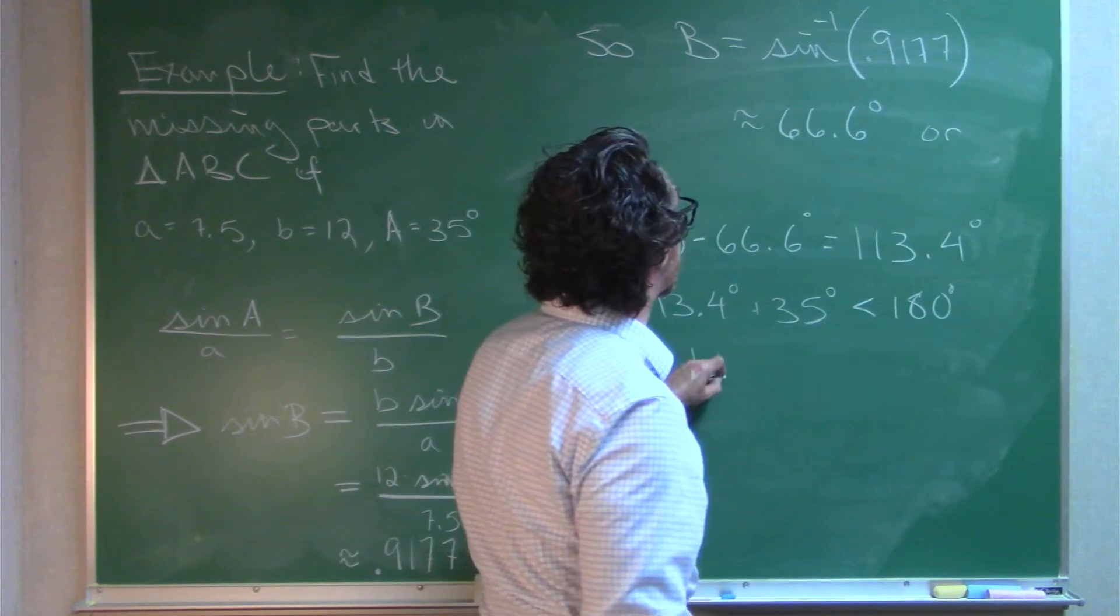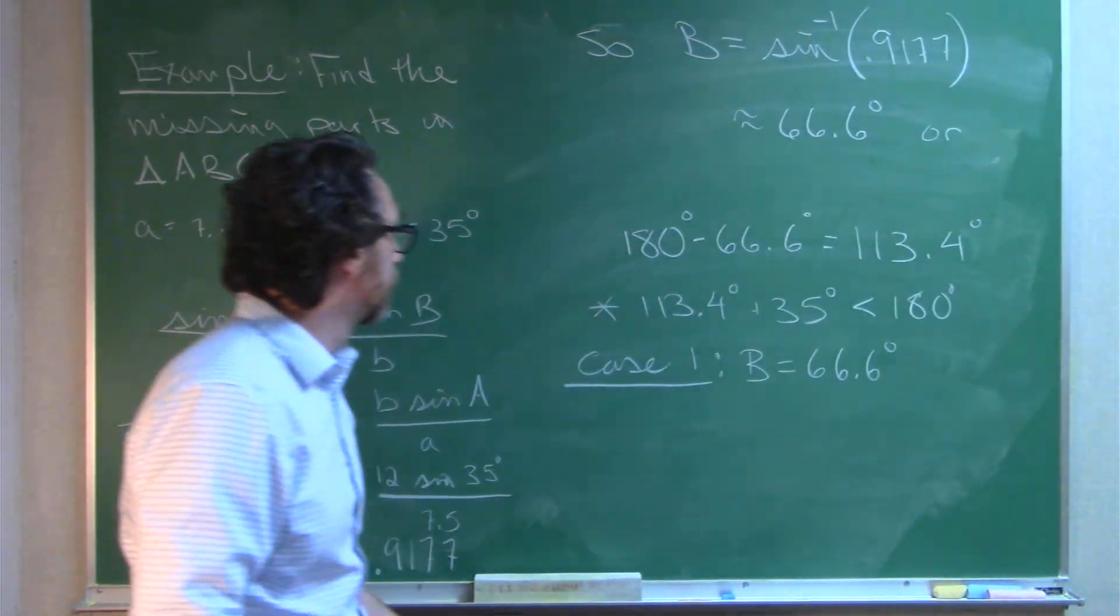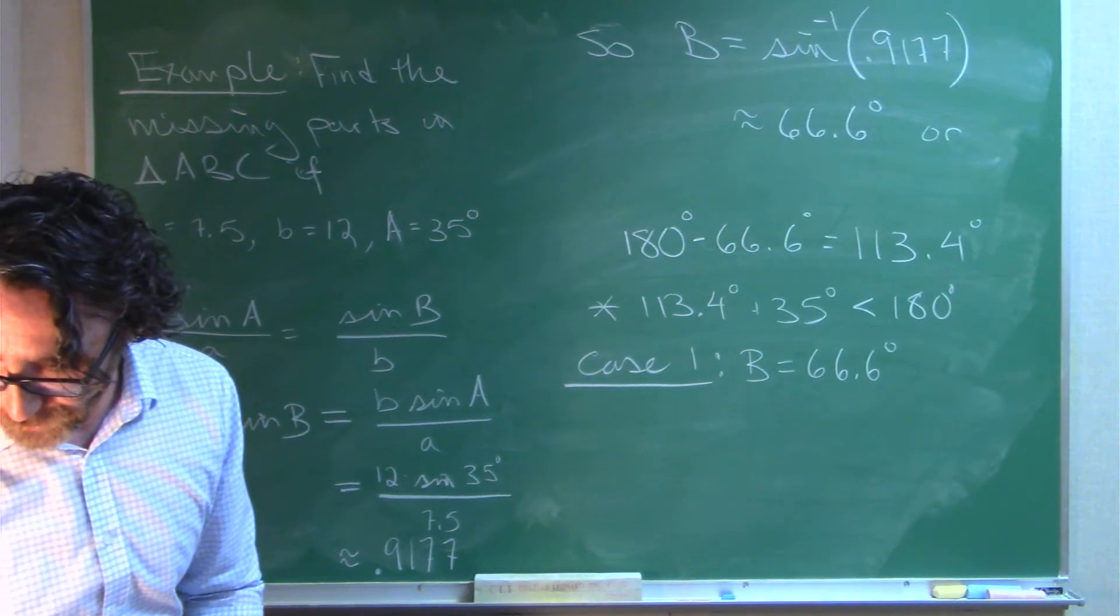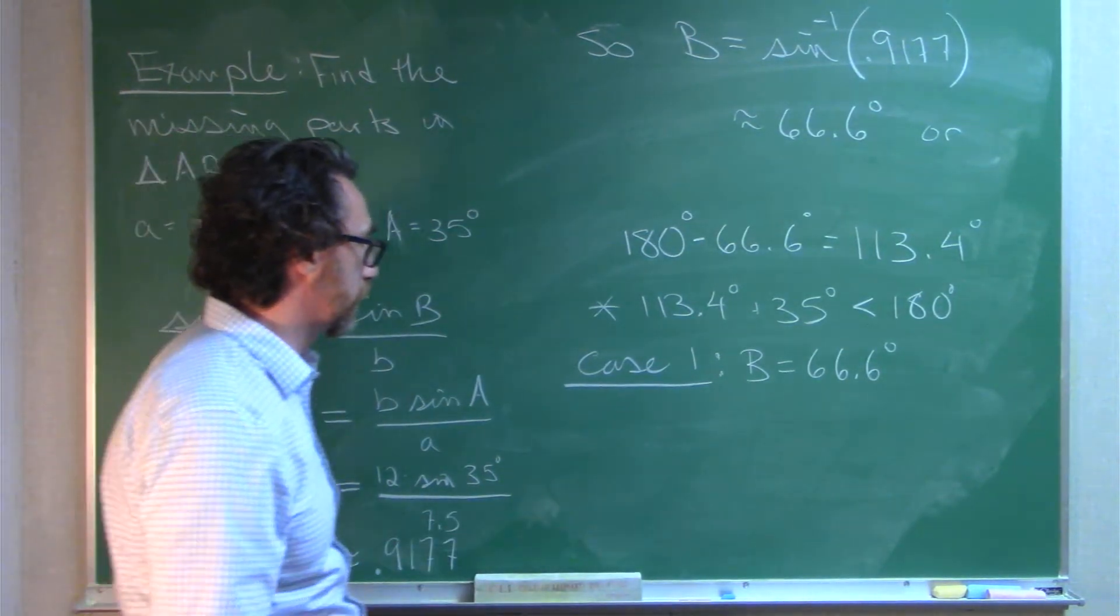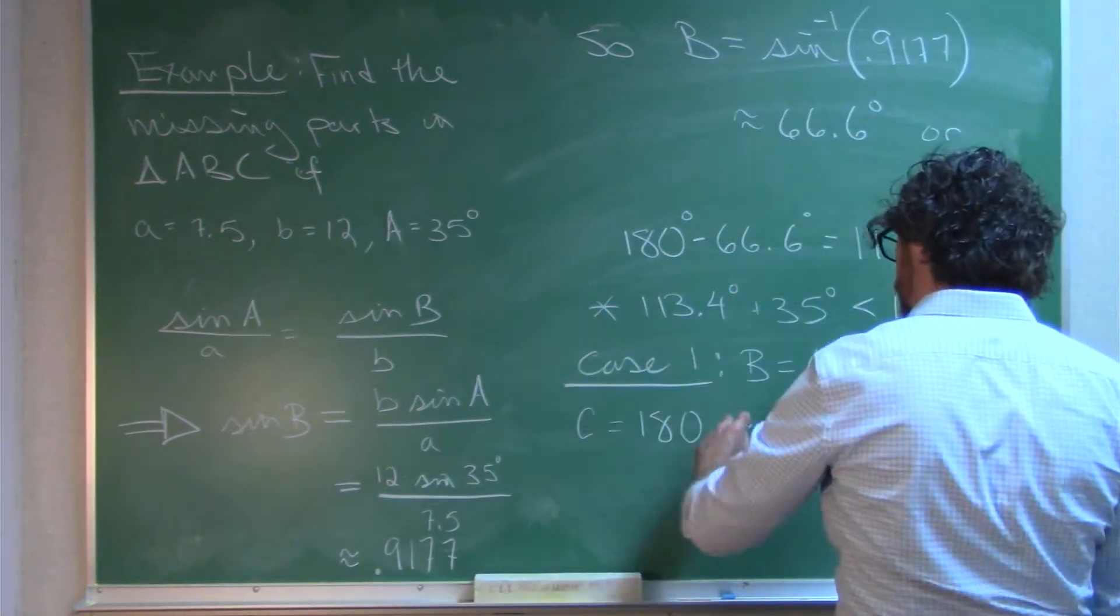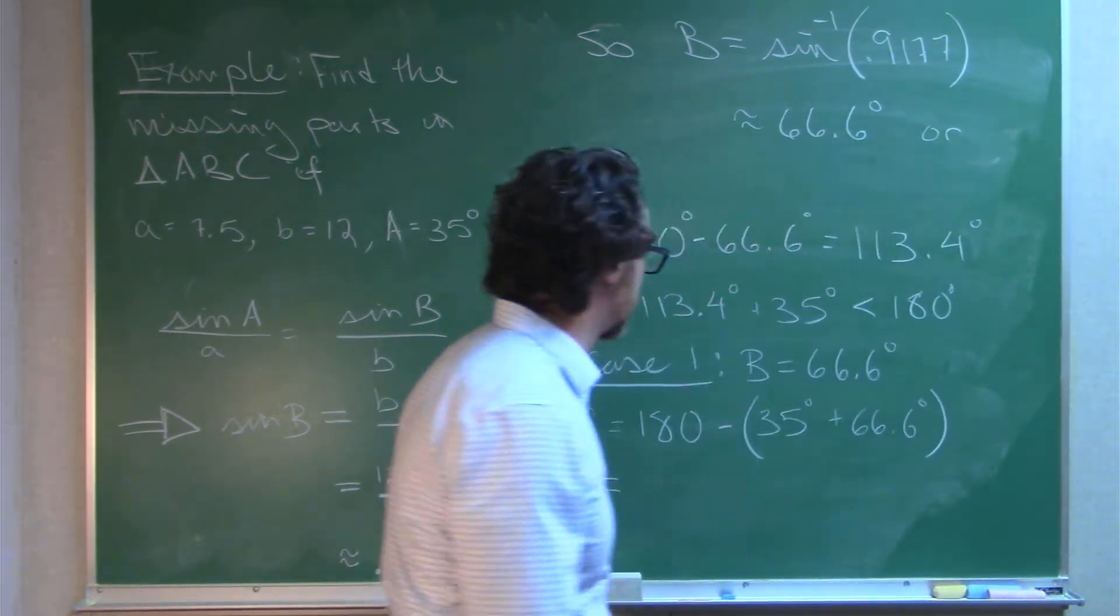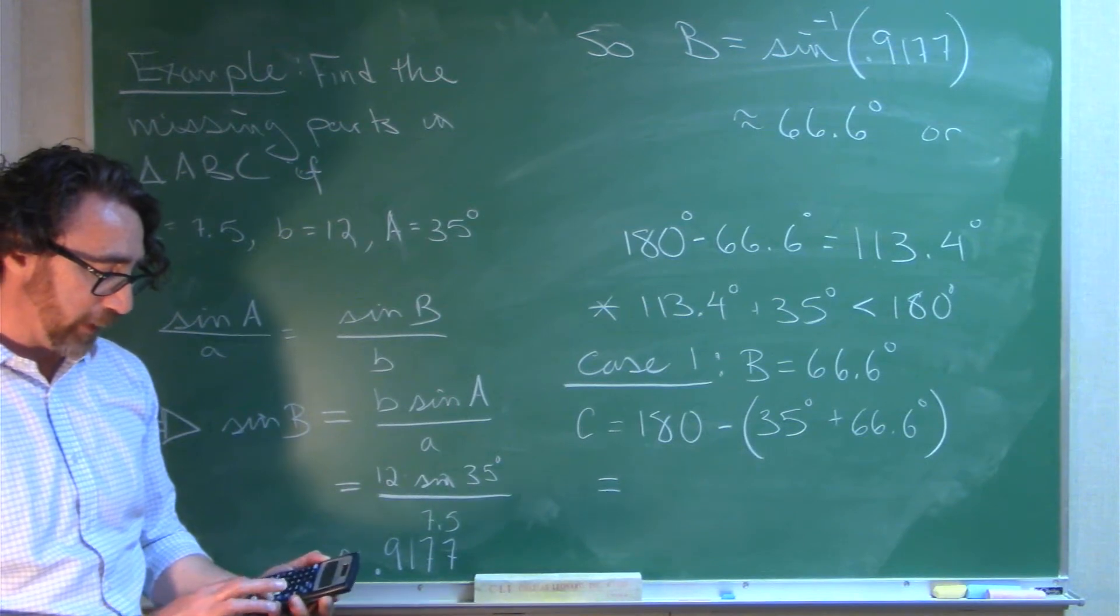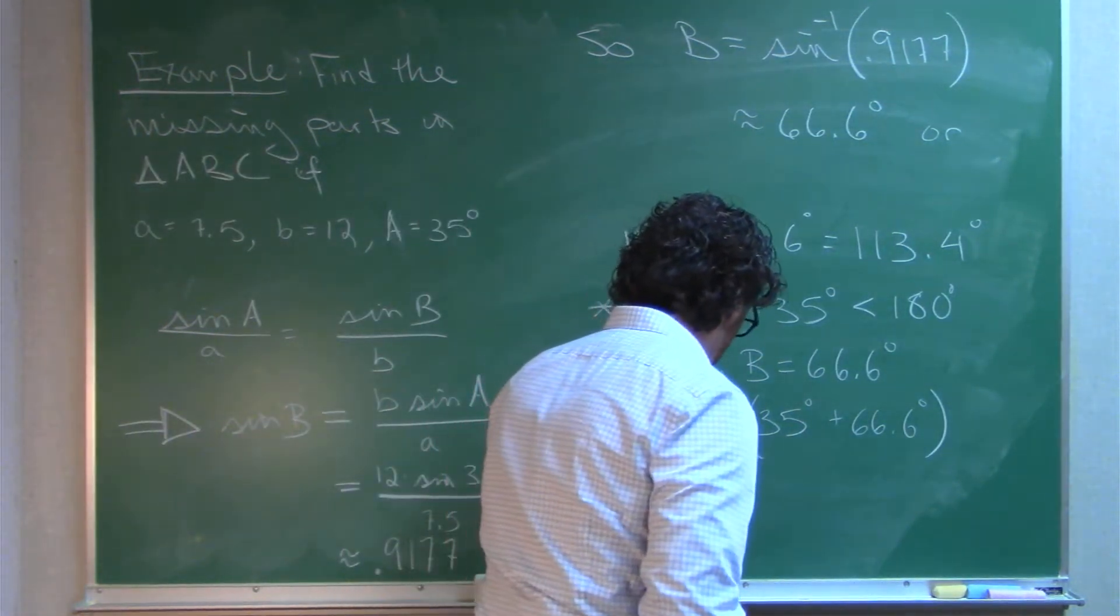Okay, so case one. B equals 66.6 degrees. So we got A, we got B. Let's see. Now we will figure out values for angle C. So case one, that's B. Let's find angle C. Angle C would be 180 minus 35 plus 66.6. Okay, we already know two of the angles, so we can figure out the third. Okay, so 180 minus 35 plus 66.6 equals, so C would be 78.4 degrees.